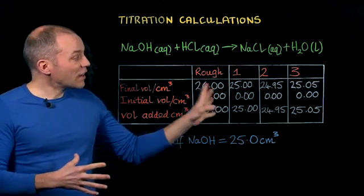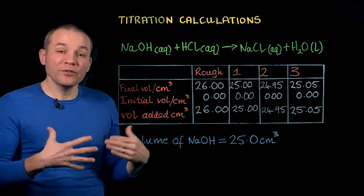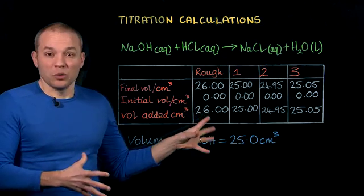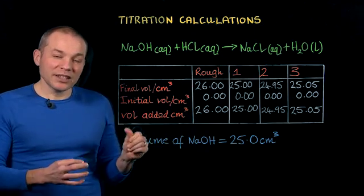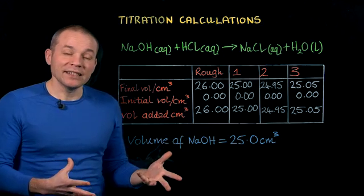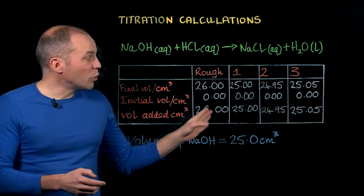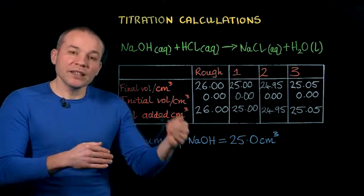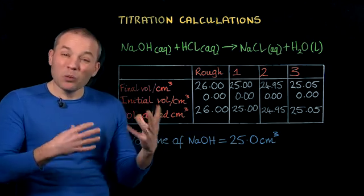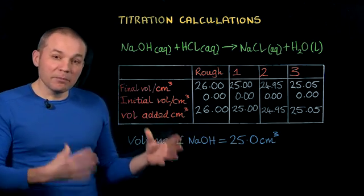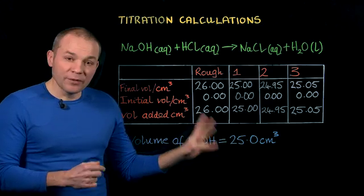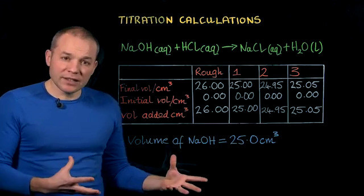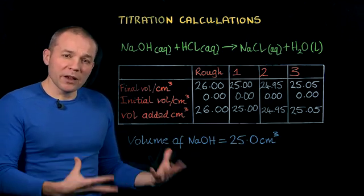To carry out this experiment we might need to do maybe three or even four separate titrations. The first titration is just a rough titration — it just allows us to get a rough idea of what volume of acid we need. Once we've got that rough idea, we can then use it to help us measure that volume more accurately, perhaps approaching that volume more carefully, maybe adding one drop at a time when we get close to it. We've got three values here that are very similar, so that gives us confidence that we're measuring them well.